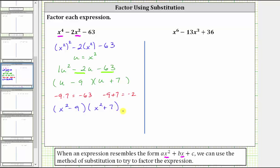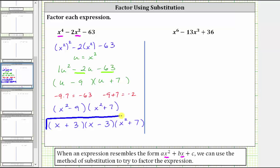Now we write this back in terms of x using u equals x squared. One binomial factor is x squared minus nine, and the other is x squared plus seven. We need to check if we can factor further. Notice x squared minus nine is a difference of squares, and therefore it will factor further. X squared plus seven does not factor. So the final factored form has three binomial factors: x squared plus seven, and the factorization of x squared minus nine. Because three squared is nine, those two factors are x plus three and x minus three. This is the correct factored form of the given expression.